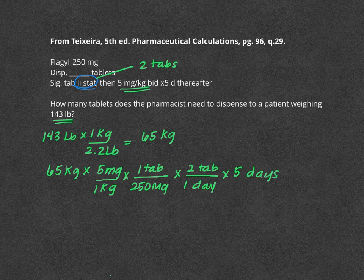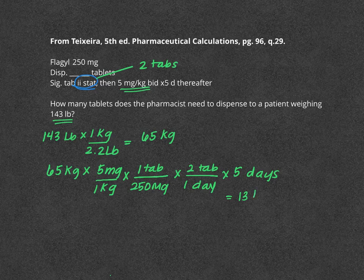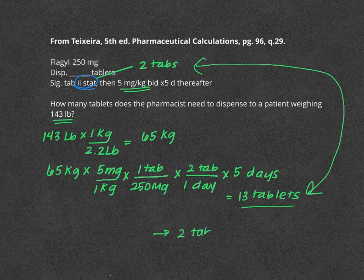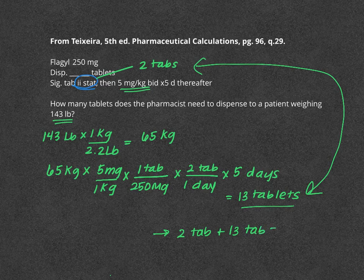And if you solve this, you get 13 tablets. Now remember, this is just half of the equation, we need to tie these two back in together. So we'll do the immediate dose. So 2 tabs plus an additional 13 tabs for the remainder of the regimen is 15 tablets total.